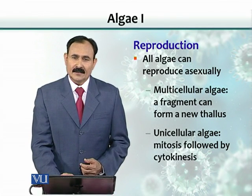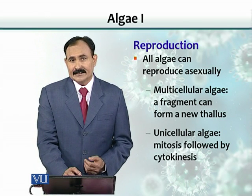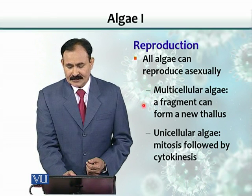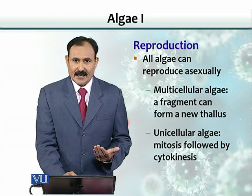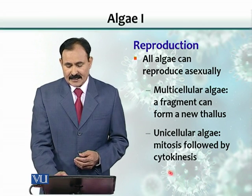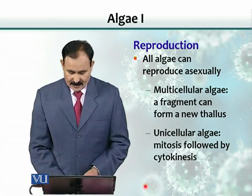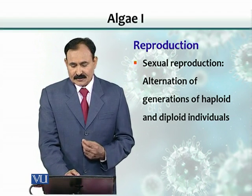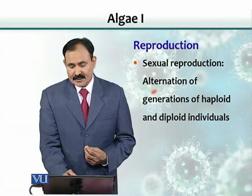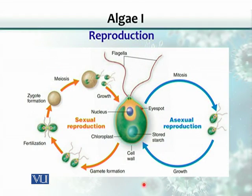Algae can reproduce both sexually and asexually. Multicellular algae can reproduce asexually by fragmentation, where a new fragment can grow into a thallus. Unicellular algae can divide by simple mitosis, and can also reproduce asexually. Sexual reproduction has been recorded as alternation of generations of haploid and diploid individuals. Asexual reproduction goes through mitosis, whereas sexual reproduction goes through gametogenesis, which produces gametes or cells.